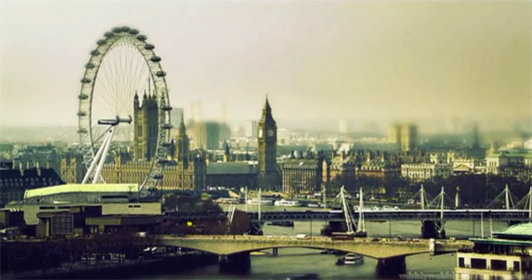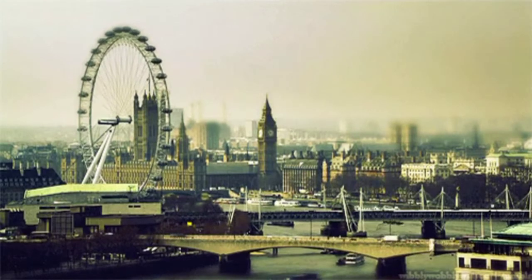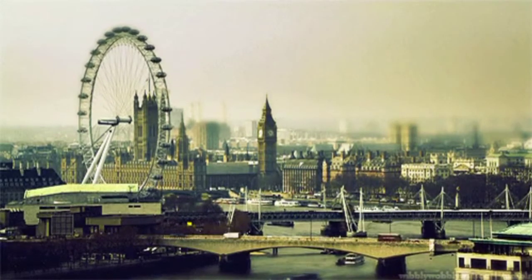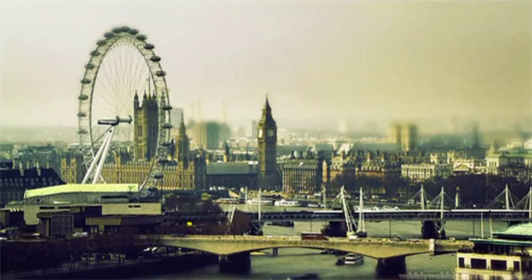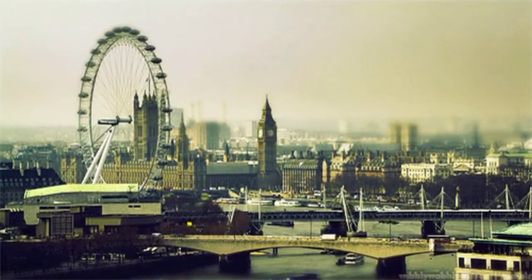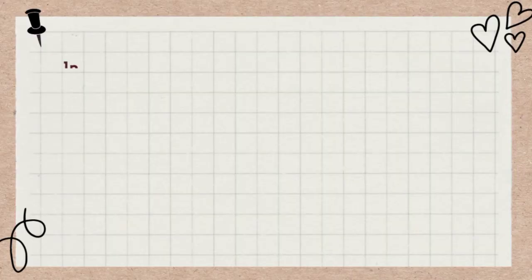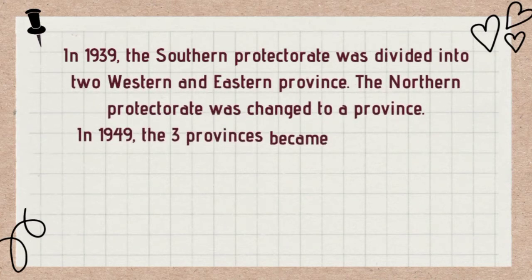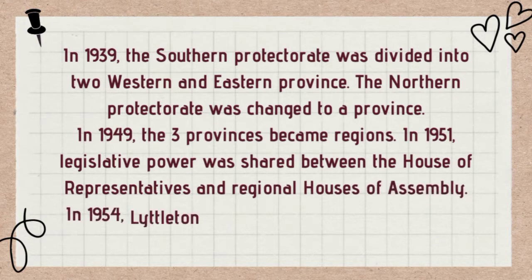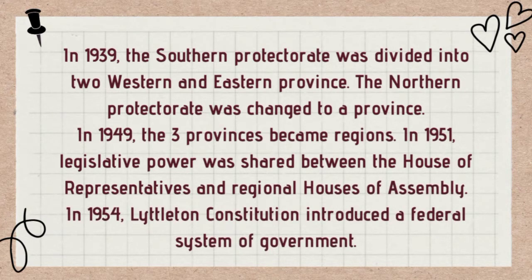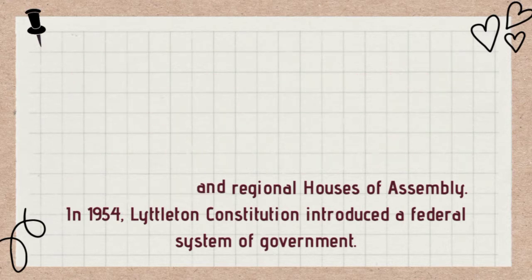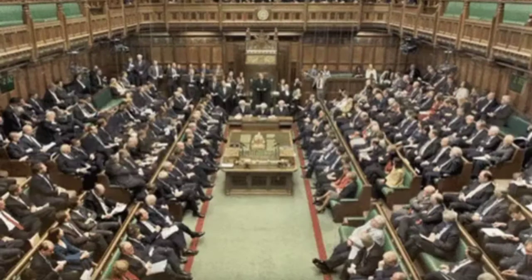The northern protectorate was changed to a province, bringing the total provinces to three: the northern, eastern, and western provinces. In 1946, regions were created out of the existing three provinces, becoming the eastern, western, and northern regions. With the emergence of the 1951 constitution, legislative powers were spelled out and shared between the House of Representatives and the regional houses of assembly.